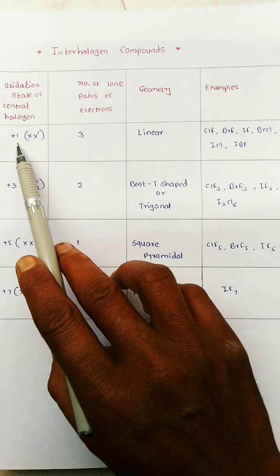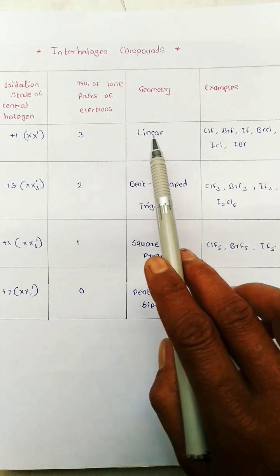Oxidation state of central halogen is plus 1, their number of lone pair 3 and geometry linear.